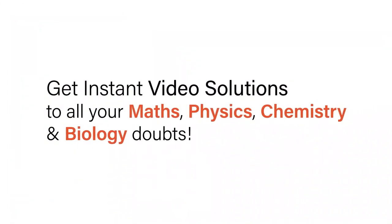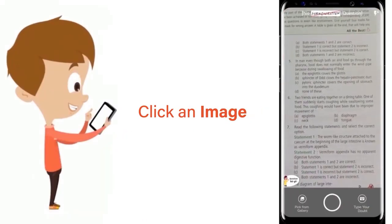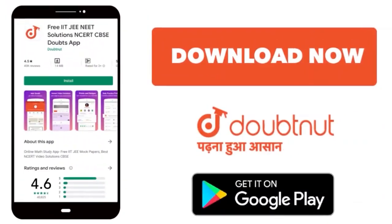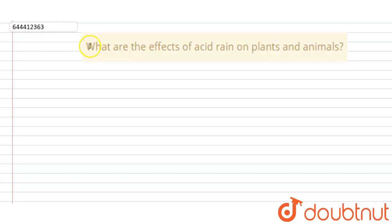With Doubtnet, get instant video solutions to all your math, physics, chemistry, and biology doubts. Just click the image of the question, crop the question, and get instant video solution. Download Doubtnet app today. Our question is: what are the effects of acid rain on plants and animals?